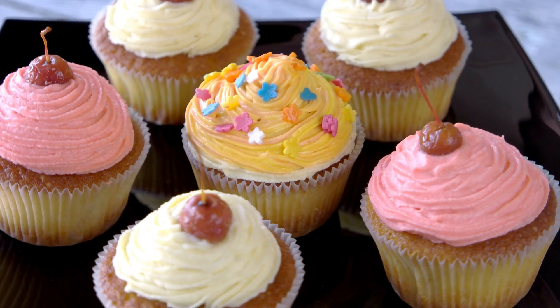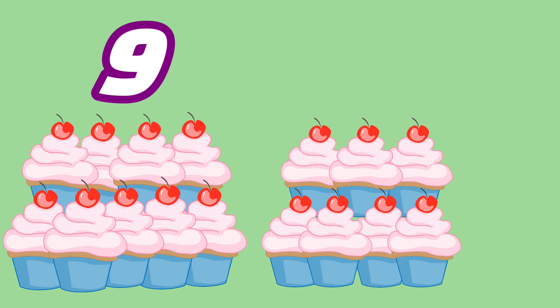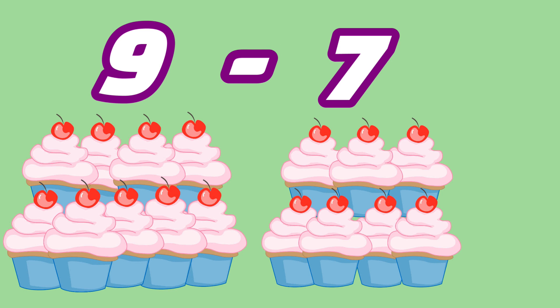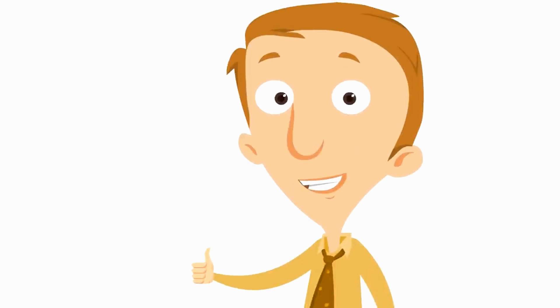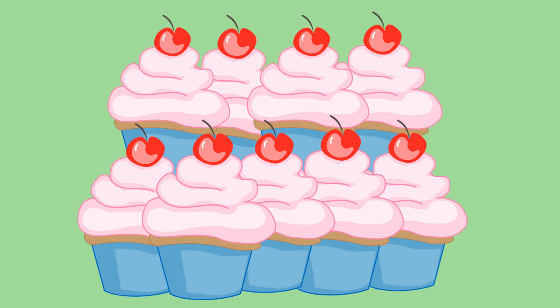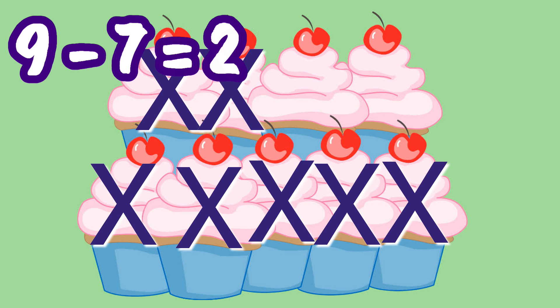It looks like some of the customers bought cupcakes. Let's say the bakery had nine cupcakes and their cupcakes have been popular — they've sold seven of them. Nine minus seven will tell us how many cupcakes are left. What is nine minus seven? Yep, two. Nine minus seven equals two. Fantastic job. If there were nine and then seven were sold, that would leave only two more cupcakes.